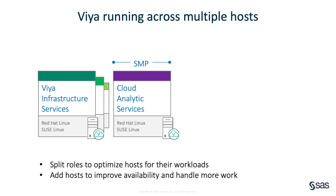CAS can operate in two kinds of modes. One, shown here as SMP, is when CAS runs on a single host like most software. Scalability in this mode, however, is limited to the ultimate size of the host machine.